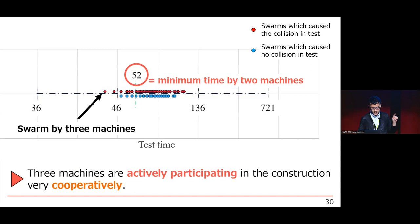This point is the execution time of three machines, and the line is a minimum score of two machines. So we could make the swarm of three machines smarter than two machines.